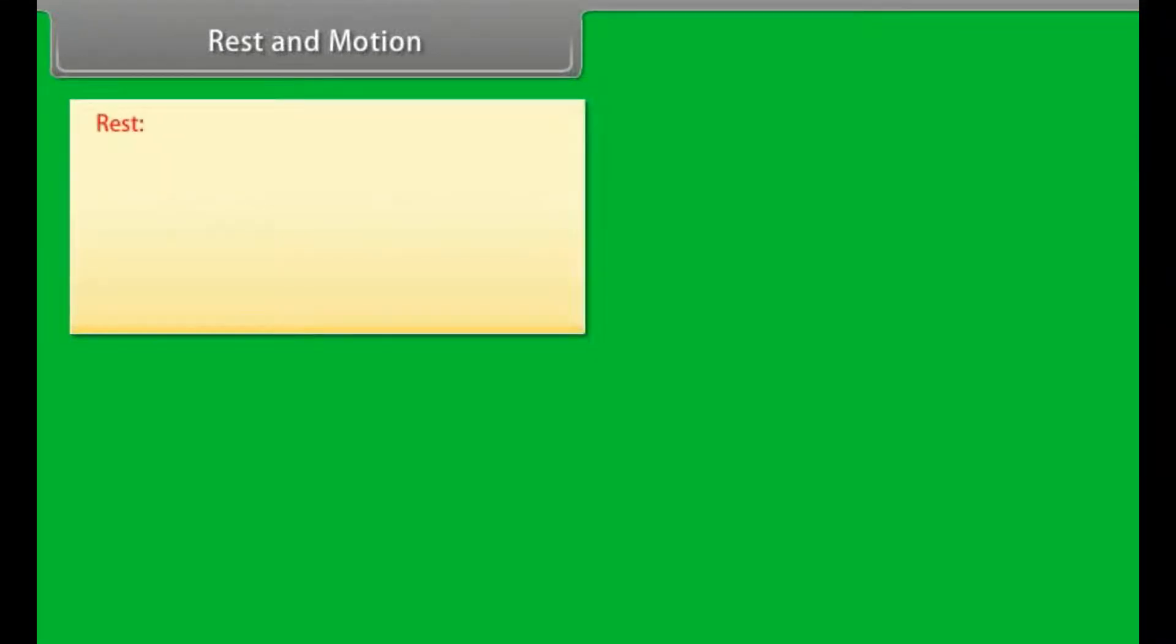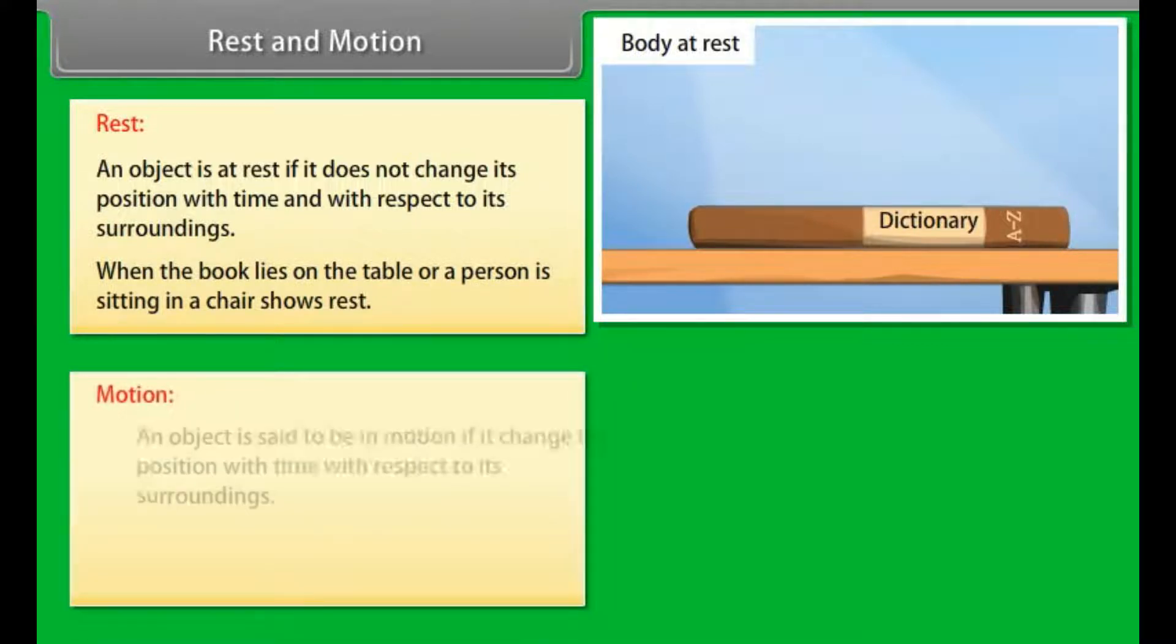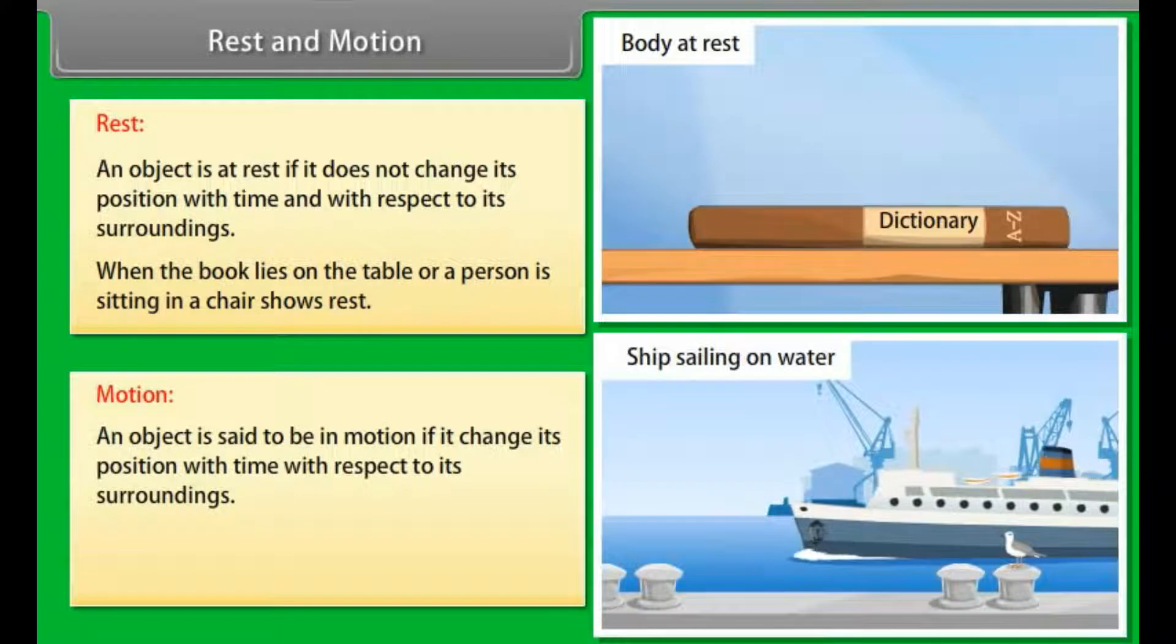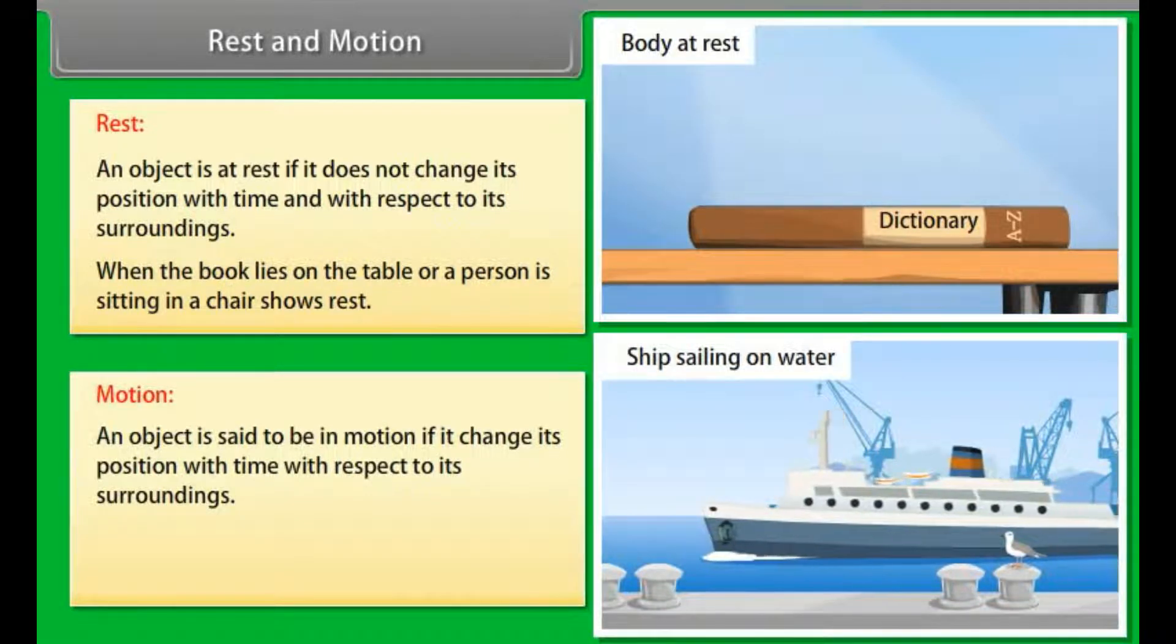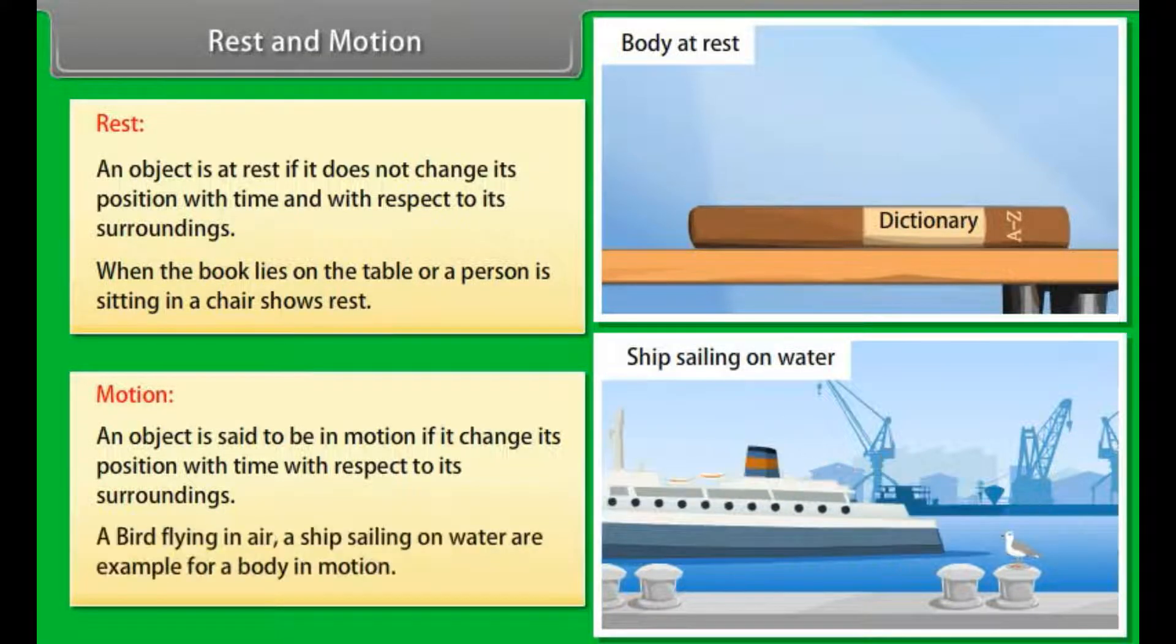Rest and Motion. Rest: An object is said to be at rest if it does not change its position with time and with respect to its surroundings. When the book lies on the table or a person sitting in a chair shows rest. Motion: An object is said to be in motion if it changes its position with time with respect to its surroundings. A bird flying in air, a ship sailing on water are examples for a body in motion.